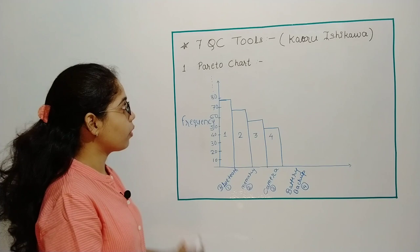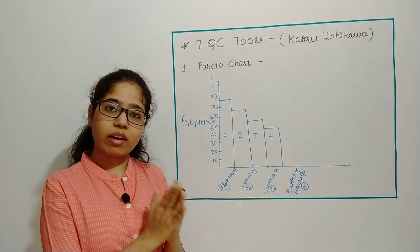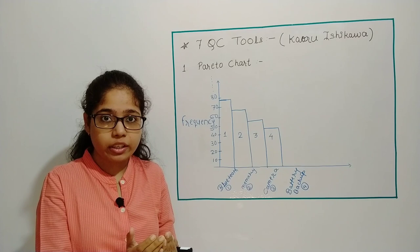Hello everyone, welcome to my channel Harsha's Academy. Today we are going to learn about seven quality control tools given by Kaoru Ishikawa. Now Kaoru Ishikawa has given seven different quality control tools with which we can reduce the defects and improve the quality of the product.